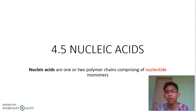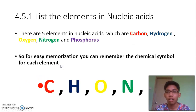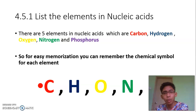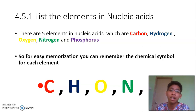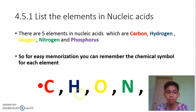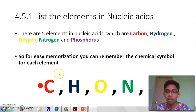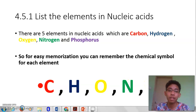First, you need to know what are the elements that make up nucleic acids. From our previous chemical components in the cell, such as protein, you can see that the majority of our body is made up from carbon, hydrogen, and oxygen. But for nucleic acid, there are two additional elements: nitrogen and phosphorus. To remember: C for carbon, H for hydrogen, O for oxygen, N for nitrogen, and P for phosphorus.